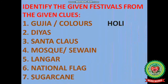Now students, identify the given festivals from the given clues. First is Gujiya or Colors. Second is Diyas. Third is Santa Claus. Fourth is Mosque or Semaya. Fifth is Langar. Sixth is National Flag. Seventh is Sugar Cane. As we use Colors on Holi and we also eat Gujiya on Holi, similarly you have to find and write which festivals are related to the given clues.